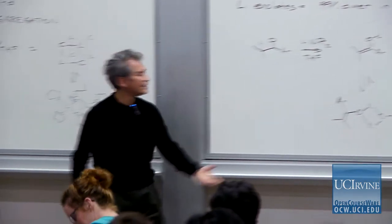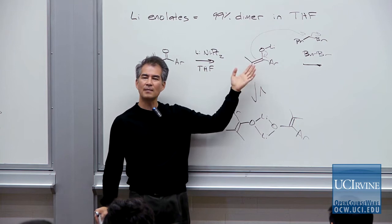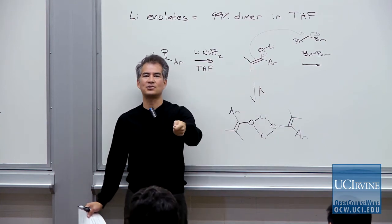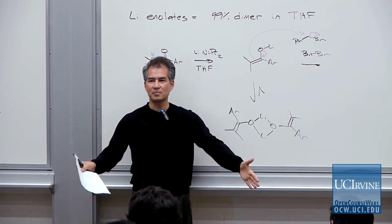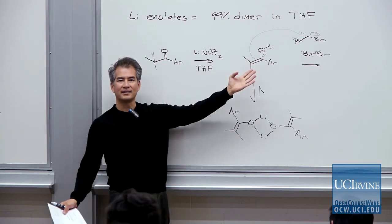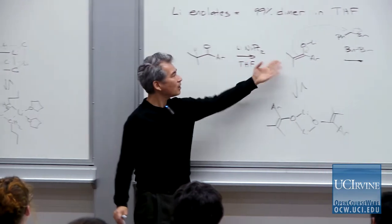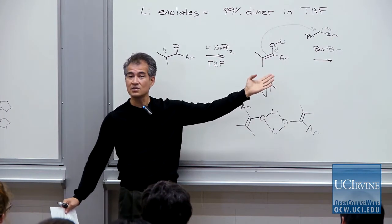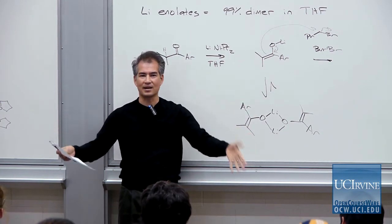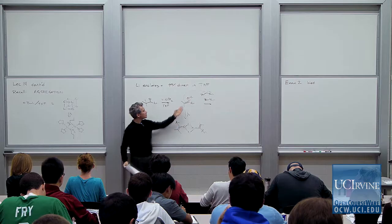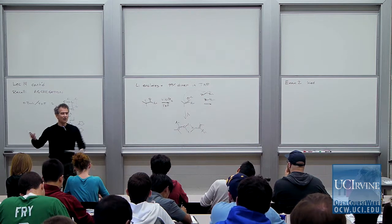Andy Streitweiser showed that even though the dimer is 99% of your lithium enolate in solution, that small amount of monomer floating around is actually what's doing the chemical reaction. In other words, if you want to draw the correct arrow-pushing mechanism, you ought to be drawing the monomer. Even though that's not most of what this lithium enolate looks like, we're going to draw all of our organometallic reactions — alkylithiums, lithium enolates — drawing the monomer.